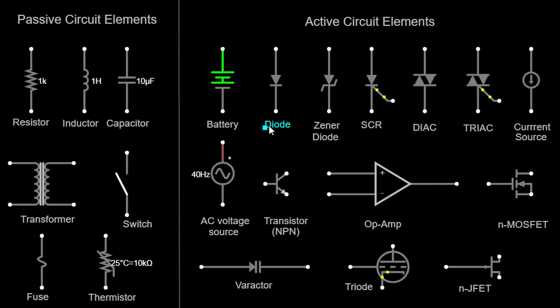Diode. A diode is a semiconductor device that allows current to flow in only one direction. It acts as a one-way valve for electric current. Diodes are represented by a triangle pointing towards the direction of current flow in circuit diagrams.